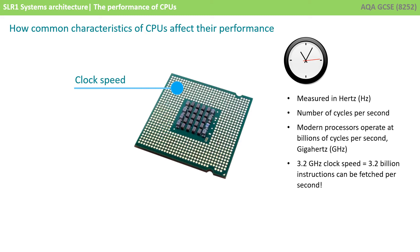There are three critical aspects of a CPU design which you need to be aware of for your exam. The first is clock speed, measured in Hertz — this is the number of instruction cycles per second it can execute. We think of modern CPUs as operating in multiple gigahertz, with a single gigahertz representing one billion operations per second. The whole cycle is controlled by the control unit and the CPU's internal clock. The faster the clock ticks, the quicker you can fetch and execute instructions.